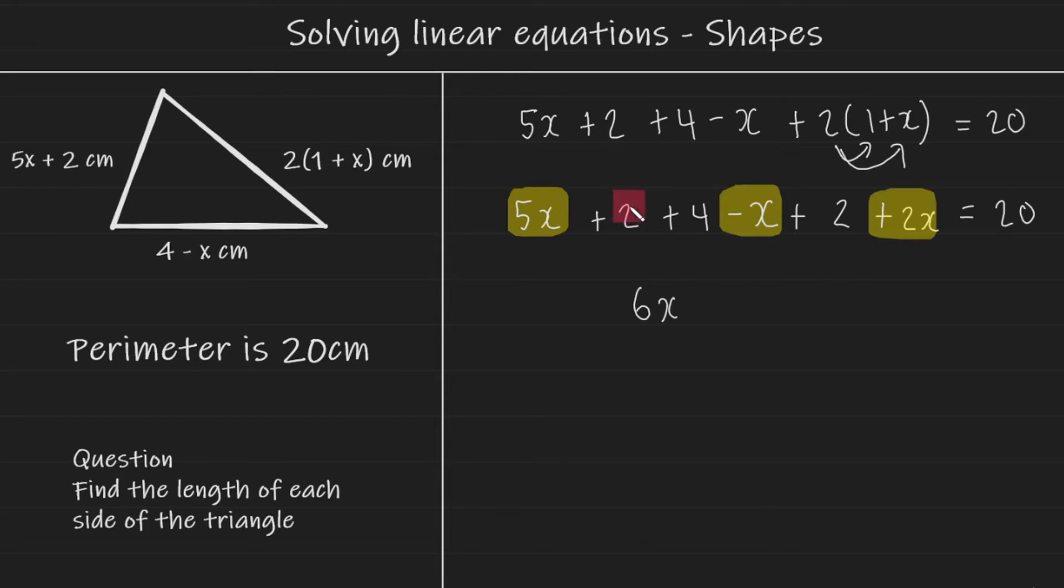And now if we collect the numbers together, so that's going to be plus 2, plus 4, plus 2. This is going to give us plus 8, which equals 20.